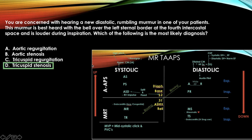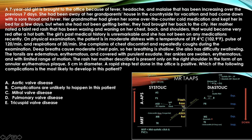The answer is tricuspid stenosis. It's a diastolic rumbling murmur best heard with the bell over the left sternal border at the fourth intercostal space — this also tests your knowledge of cardiac landmarks for chest auscultation.